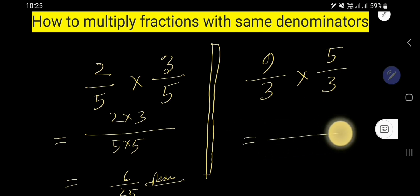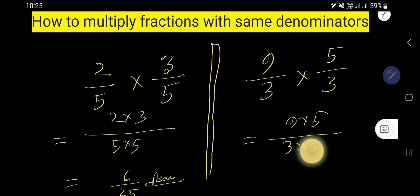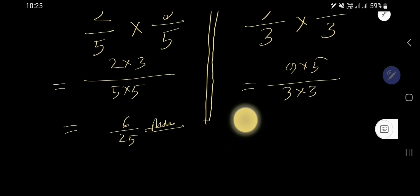So what do we need? We need to multiply the top numbers and bottom numbers, and we are getting a new fraction.